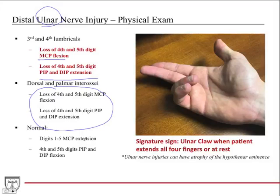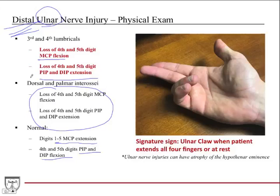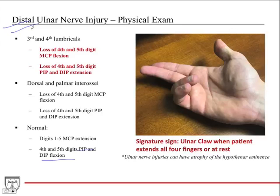What's going to be normal is MCP extension at all five digits, because the radial nerve is intact and the extensor compartment is intact. The other thing is that fourth and fifth digit PIP and DIP flexion will be intact, because since it's a distal ulnar nerve injury, really only one flexor muscle is innervated by the ulnar nerve entirely, and then you have the medial half of flexor digitorum profundus innervated by the ulnar nerve as well. Since it's a distal injury, all the forearm muscles have already received their innervation, so you're still going to have flexion at the PIP and DIP joints.